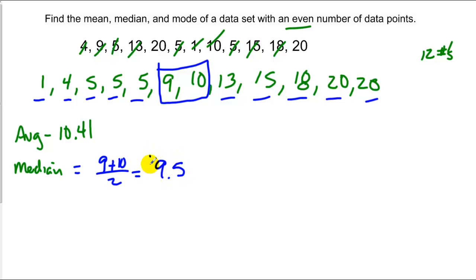So in this case, I'm going to get 9.5, and that's not even a number in the data set, which is okay because the average wasn't a number in the data set either. The mode, pretty easy in this case. The 5 appears three times, so the mode is equal to 5.